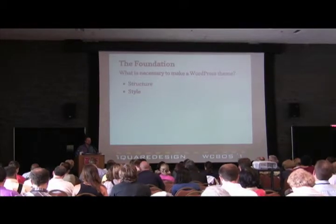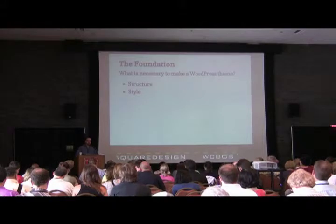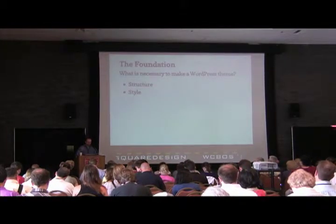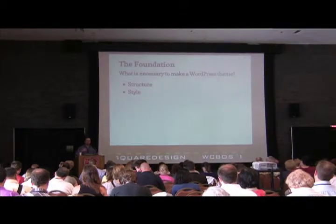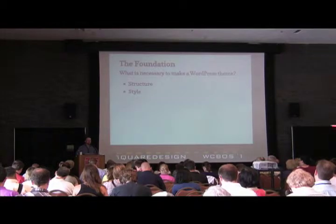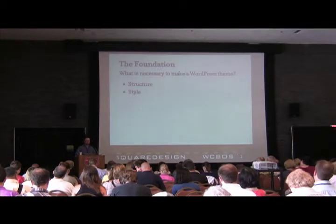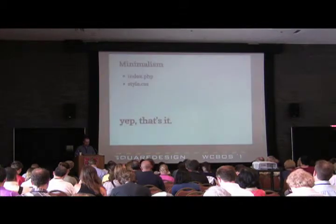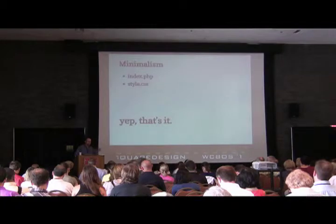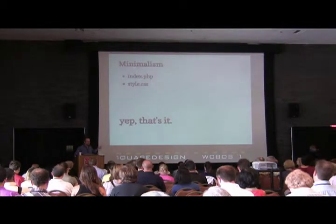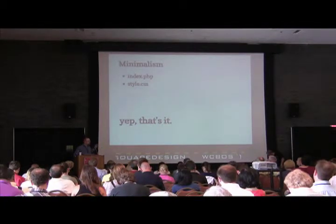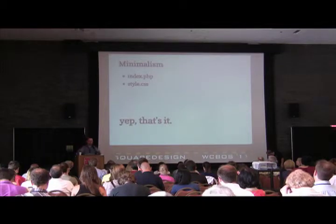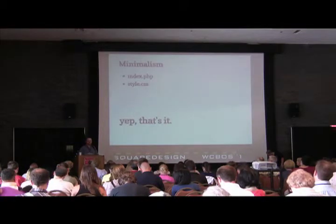The very basic things you need for a WordPress theme are something that provides structure for how content gets into it and something that gives it style. For WordPress, the bare minimum we need is an index.php file that grabs the posts, and a stylesheet that doesn't even have to apply styles.